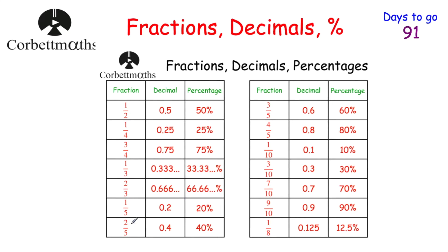A fifth is 0.2, or 20%. Two fifths is 0.4, or 40%. Three fifths is 0.6, or 60%. Four fifths is 0.8, which is 80%. A tenth is 0.1, which is 10%. Three tenths is 0.3, which is 30%. Seven tenths is 0.7, which is 70%. Nine tenths is 0.9, which is 90%. And an eighth is half of a quarter, so that's 0.125, or 12.5%.